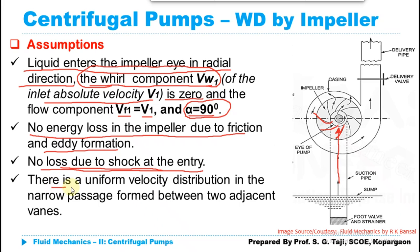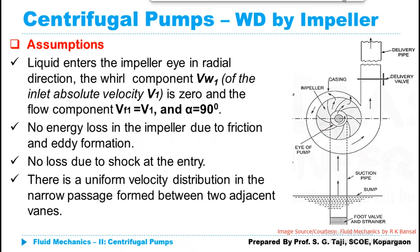The fourth and last assumption: there is a uniform velocity distribution in the narrow passage formed between two adjacent vanes. Whatever narrow space is available between the two vanes, the velocity distribution is uniform. This simplifies deriving the expression for force and momentum per second by the impeller on the fluid, as a non-uniform distribution would make it far more complex.